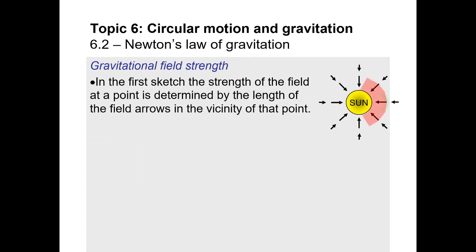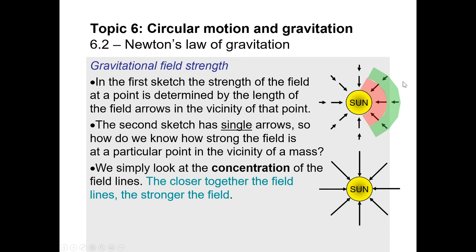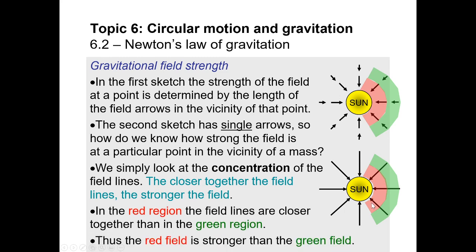Field line density tells us the strength of the field. Looking at a red zone close to the mass versus a green zone further away: the arrows in the red zone are much closer together, indicating much higher field strength. Whether you use arrow length or line spacing, the closer to the source the stronger the field — this is the inverse square relationship in action.